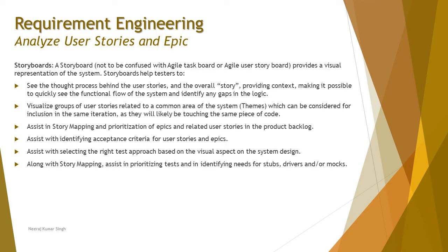The very first technique is storyboards. These are not the agile task board or agile user storyboard — these are parent storyboards that help you derive how a system works, including the dependency and control flow between different stories. When you represent an entire system on the board with explanations of sub-stories and the flow between modules, that is what we call a storyboard.